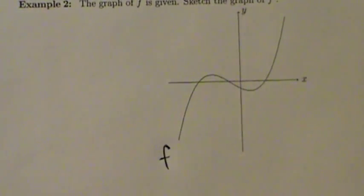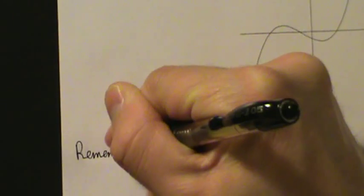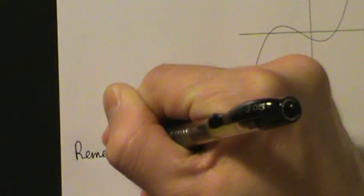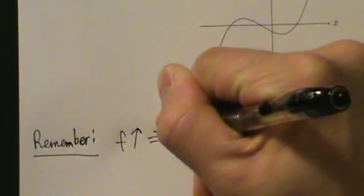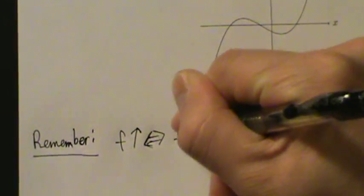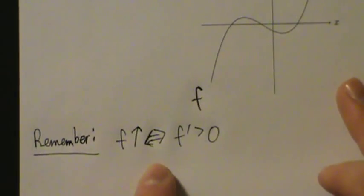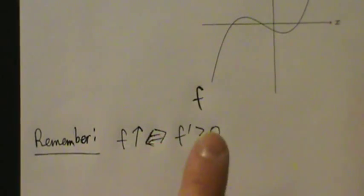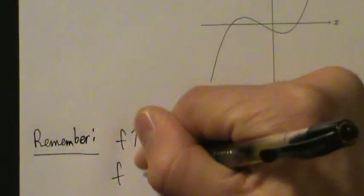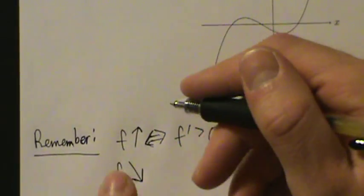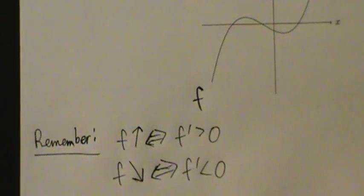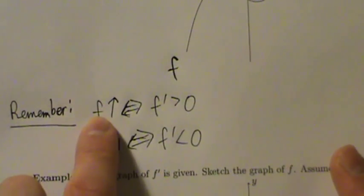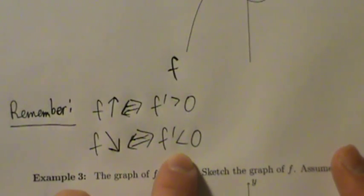Just like in the last video, the important thing to remember — very, very important to always keep in mind when you do things with derivatives — a function is increasing if and only if its derivative is positive. This double arrow means if and only if, so these say exactly the same thing. Likewise, f decreasing is the exact same thing as saying f prime is negative.